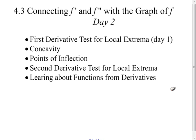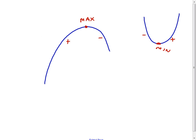Today is day two of 4.3. We're going to talk about concavity and points of inflection. I drew a couple functions here in blue. You can notice we have a max here because the derivative is changing from positive to negative, so that would ensure us, by the first derivative test, that we have a max.